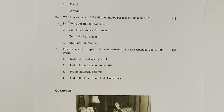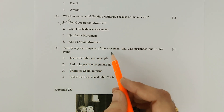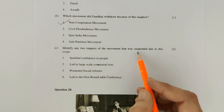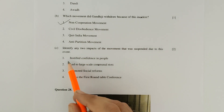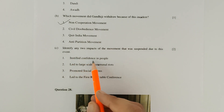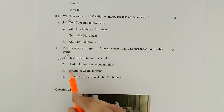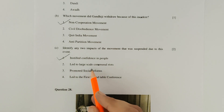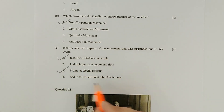Sub-part C: Identify any two impacts of the movement that was suspended due to this event. Option 1 — it instilled confidence in the people — is correct. Option 3 — it promoted social reforms — is also correct. Options 2 and 4 are not correct impacts of the Non-Cooperation Movement.